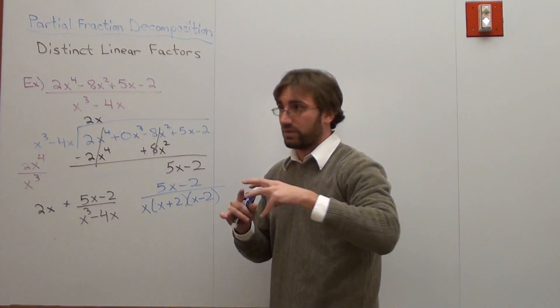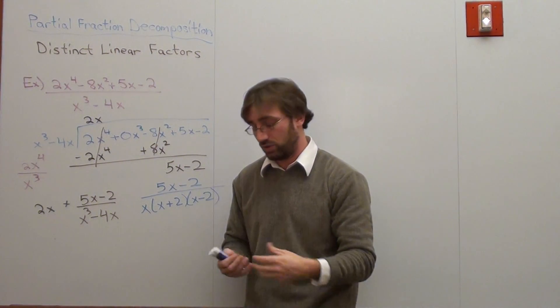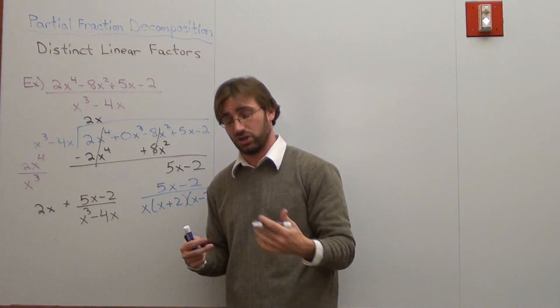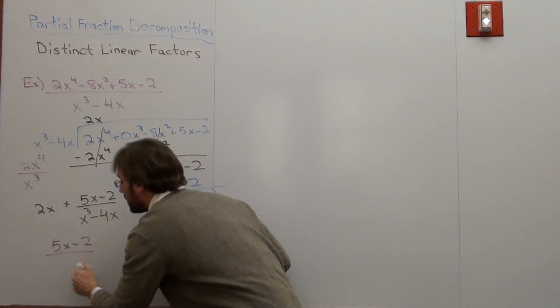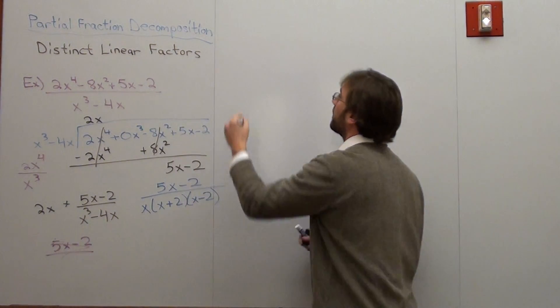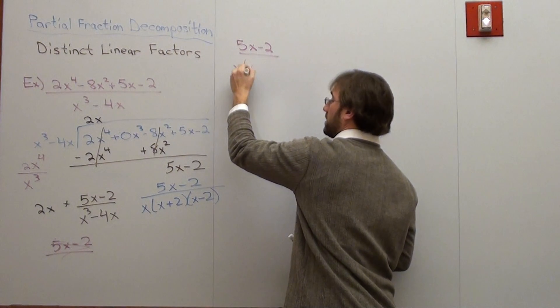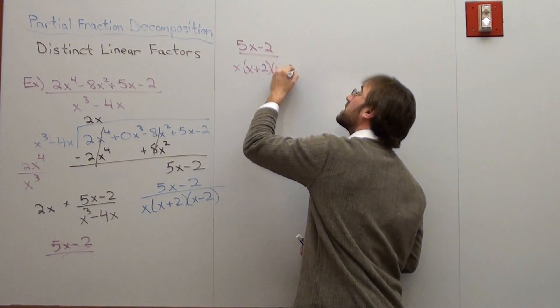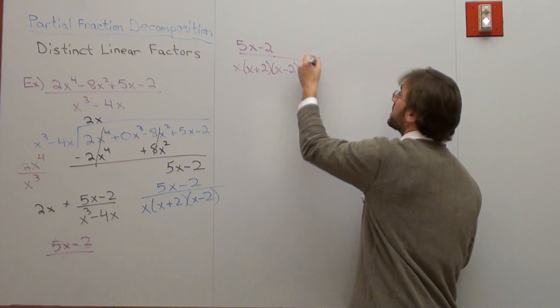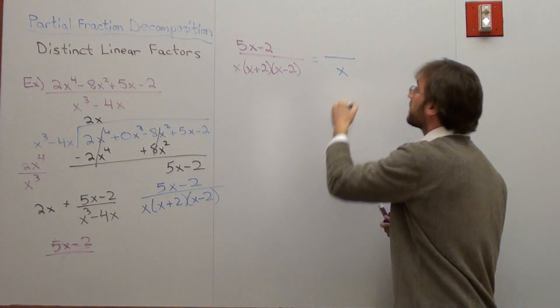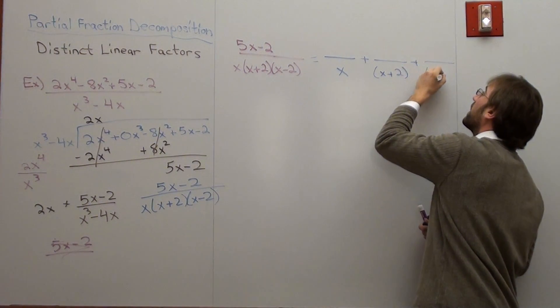Now in order to do that, you have to debate whether it's quadratic or linear. And all of these terms are linear, so there's actually a specific method that we use in order to do this. 5x subtracted by 2 over x times x plus 2, x minus 2 is separated into three particular fractions. It's something over x plus something over x plus 2 plus something over x minus 2.